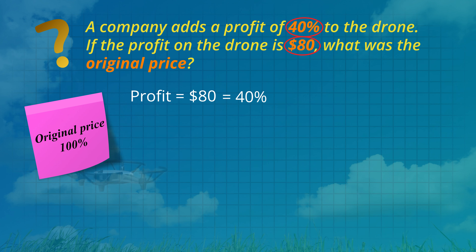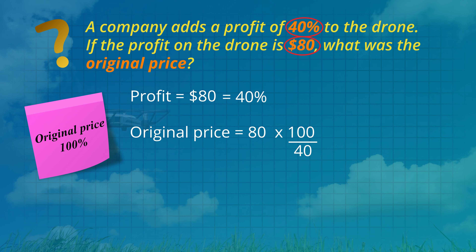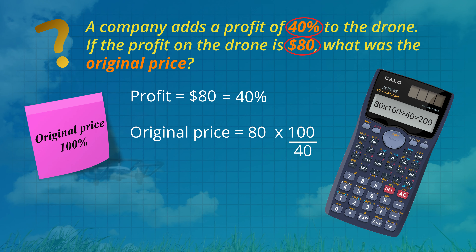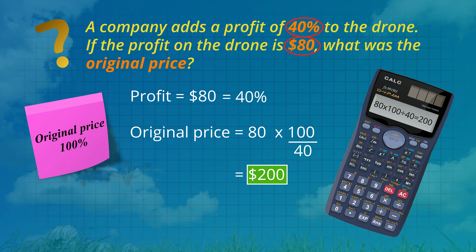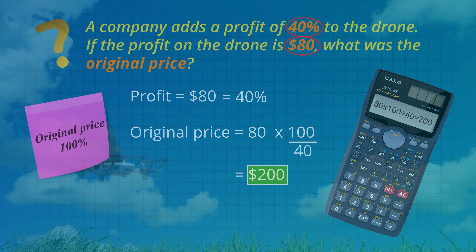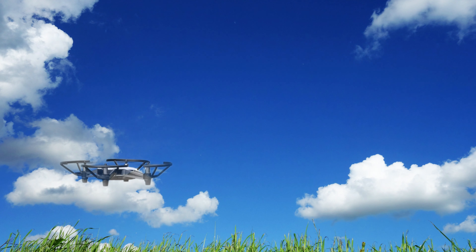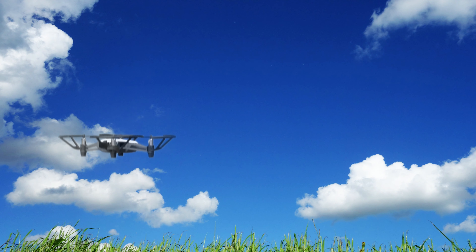So let's work in reverse to find the original price. Instead of multiplying by 40 over 100, let's multiply by 100 over 40. So 80 multiplied by 100 divided by 40 is $200 as the original price. Thank you.